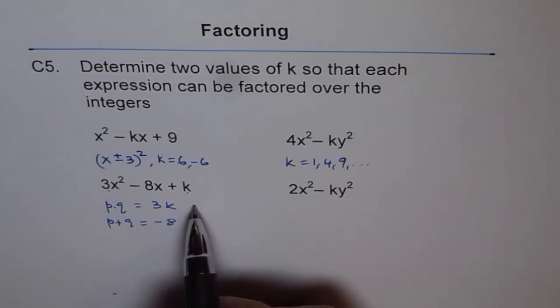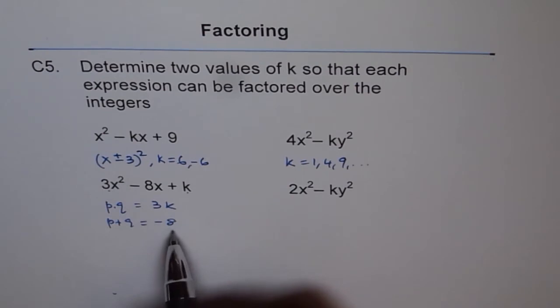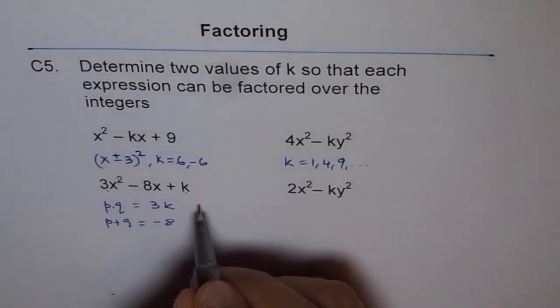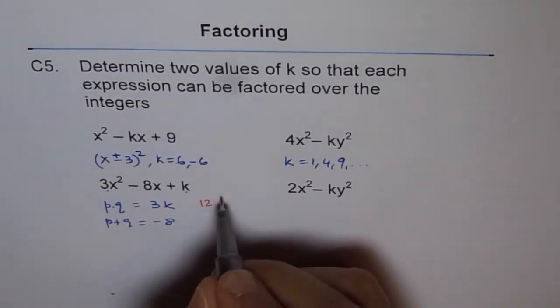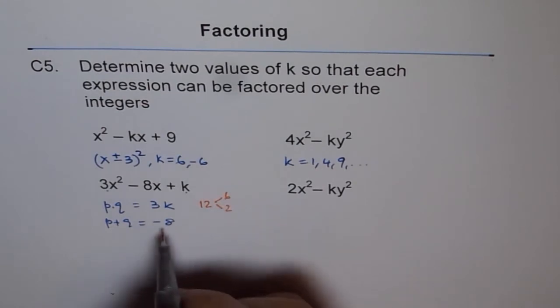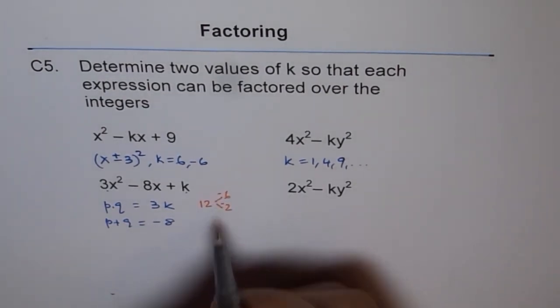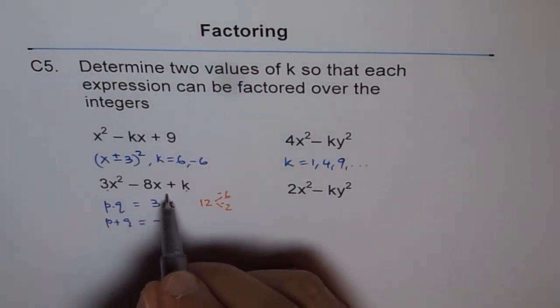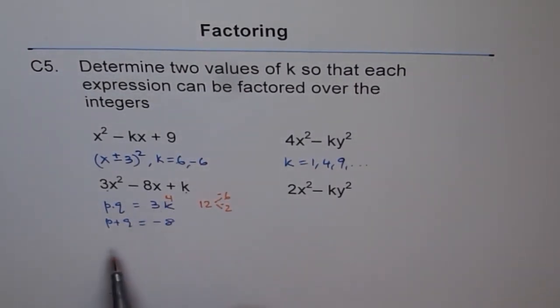Now, 12, can 12 give you minus 8? Let us work it out. So, let us think like this. 12. Now, yes, we can get 6 times 2, but we need minus, it could be minus 6 and minus 2. So it works. So k value of 4 can work. Because 3 times 4 is 12 and 12 could be written as minus 6 times minus 2. When you add them, you get minus 8. So it works. So this is one option.